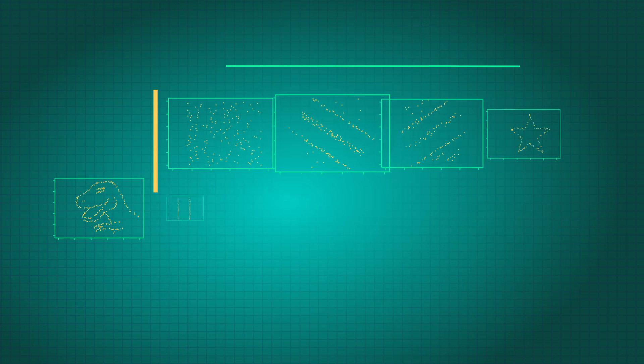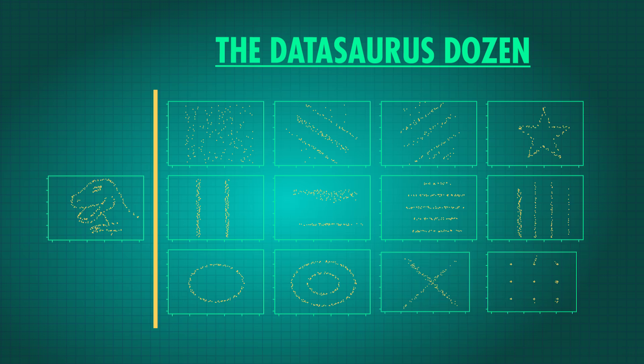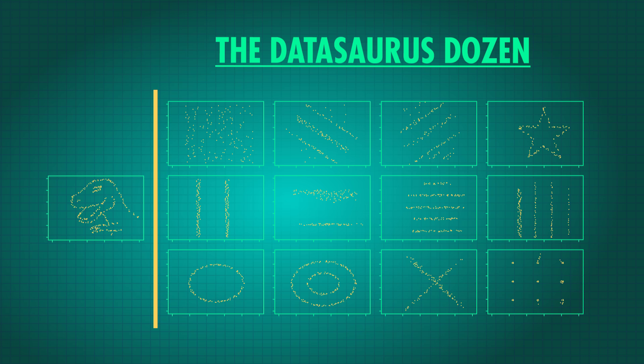Before we finish with correlation, I just want to warn you — r and r squared aren't everything. It's important to look at a scatter plot of data when you can. These are the Datasaurus Dozen: these very different plots all have the same correlation, but we can see that the relationships are completely different. Correlation is an important piece of the puzzle when you're looking for a linear relationship between two variables, giving us information about how well that line explains the data.